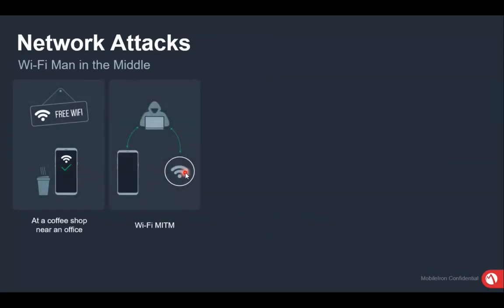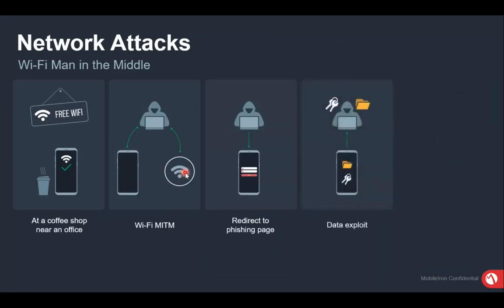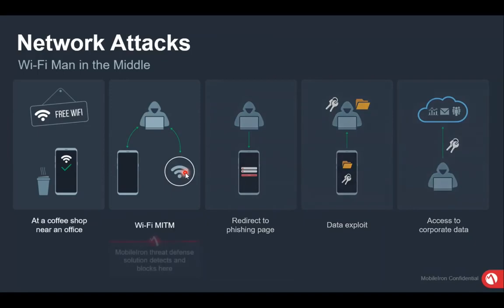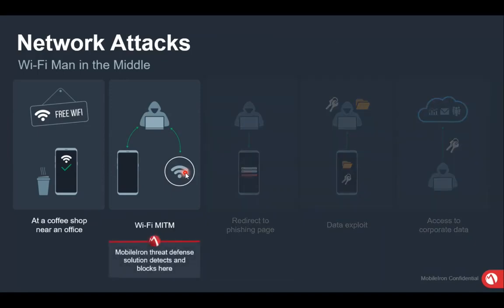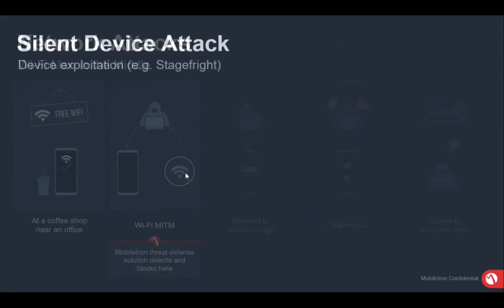Similarly, if a user connects to a free Wi-Fi — in coffee shops, airports, or bus stations — and is redirected to a phishing page, the moment they enter their username and password the hacker gets their credentials. With MobileIron MTD, the moment a redirect to a phishing page is detected, it alerts the user and won't even allow connection to the malicious Wi-Fi — it immediately drops the connection.